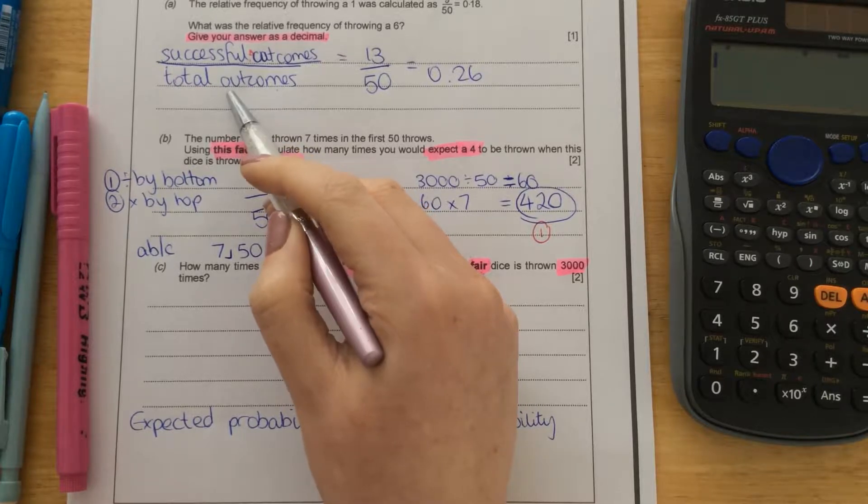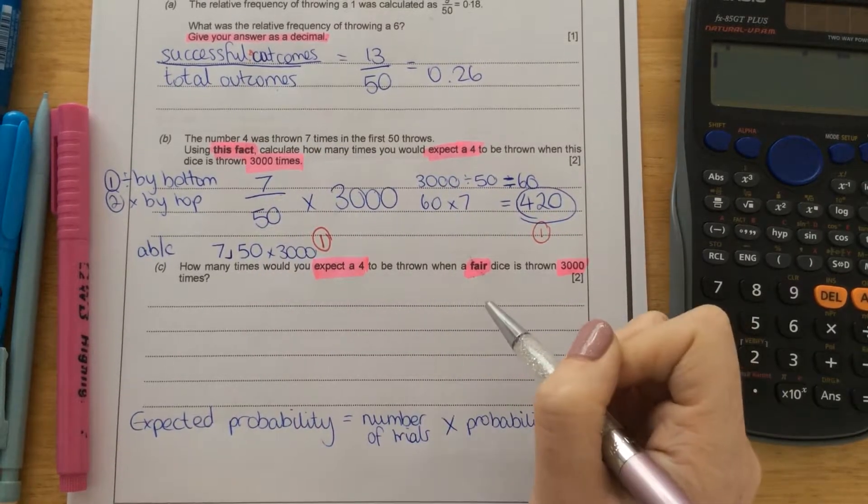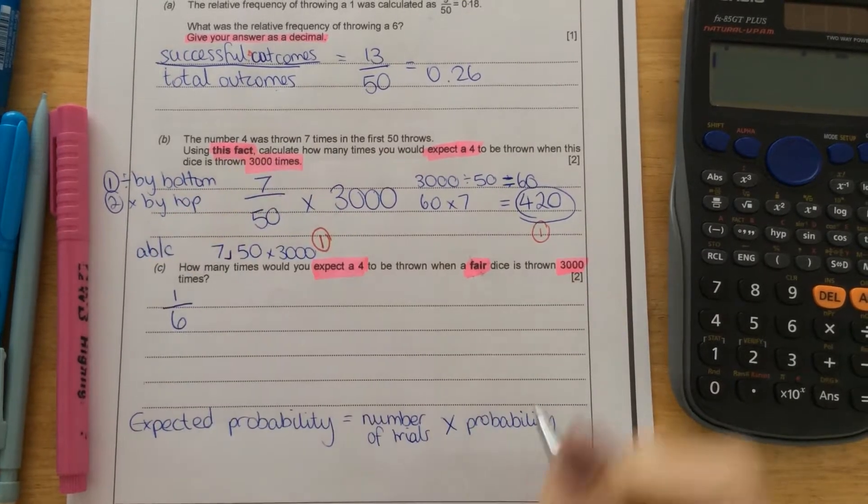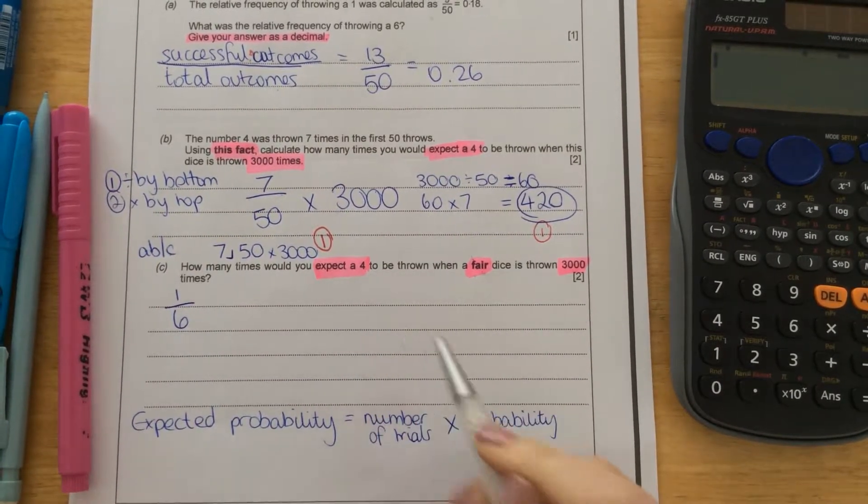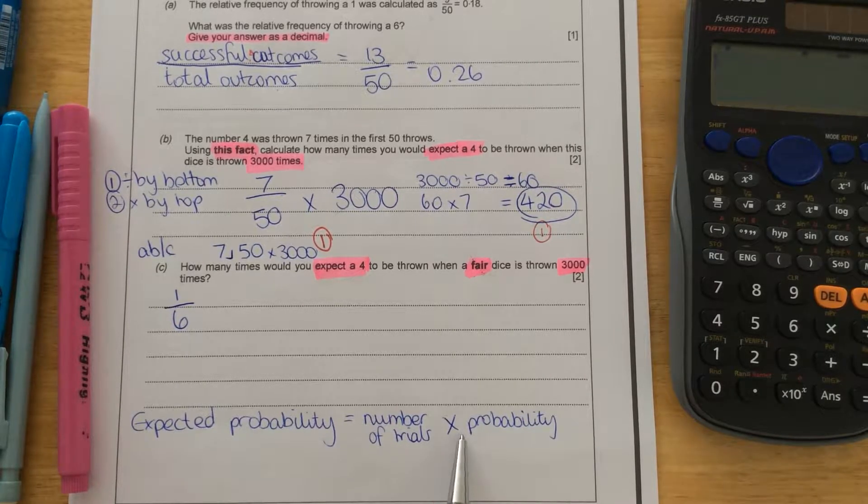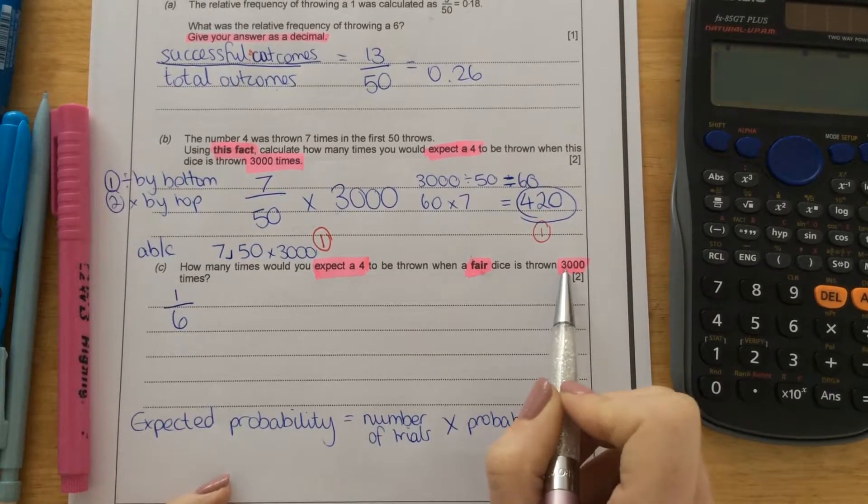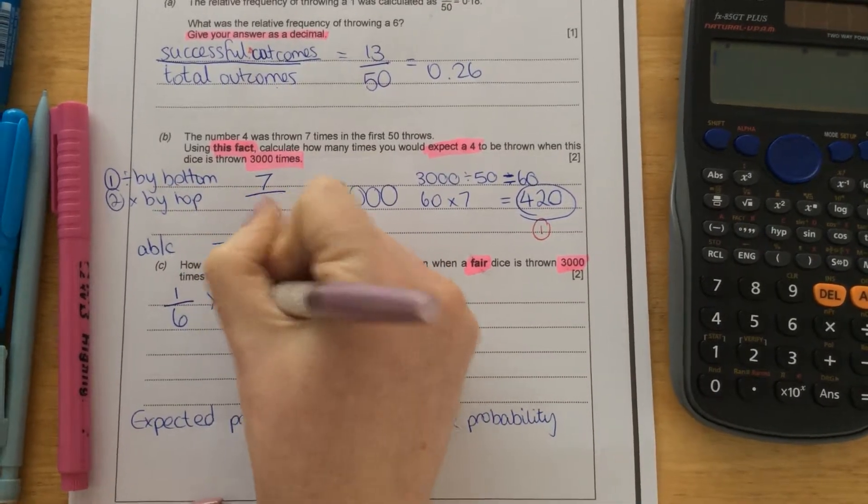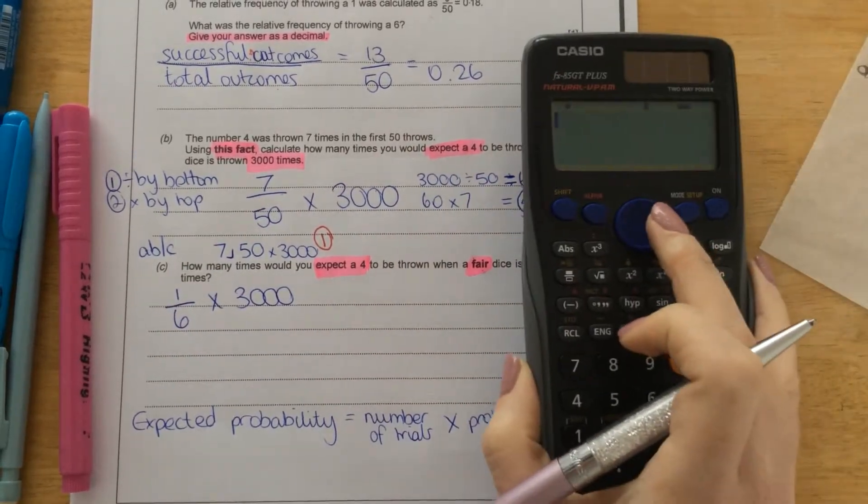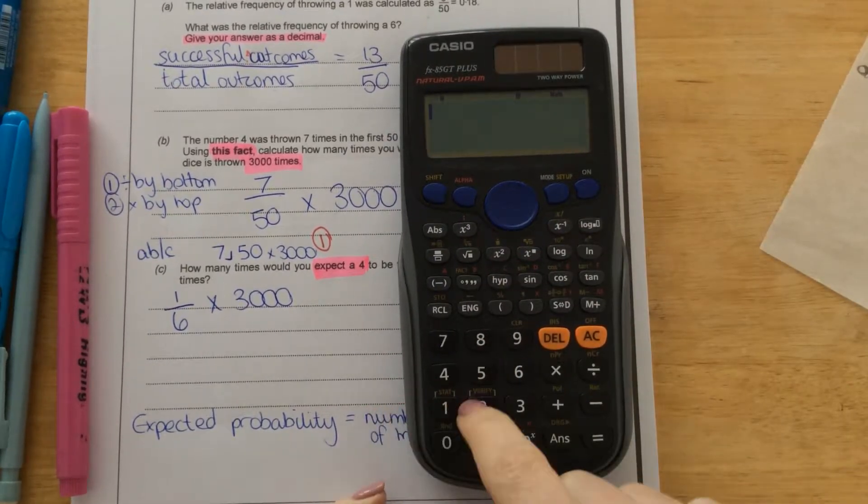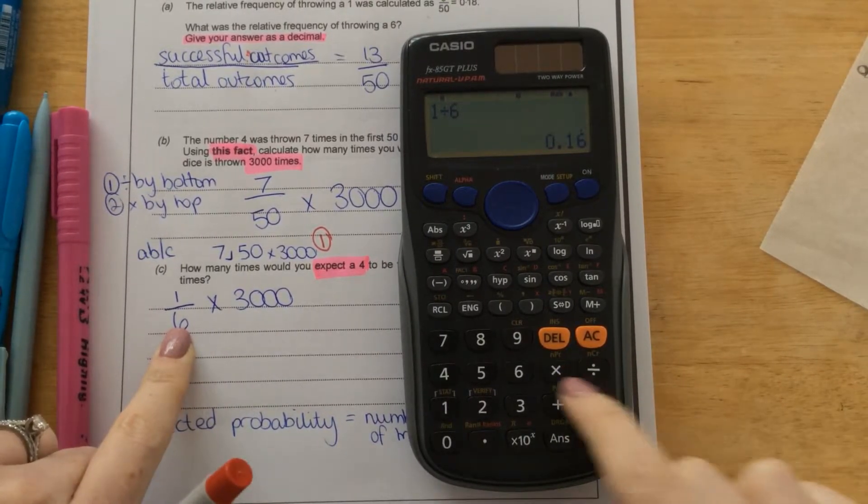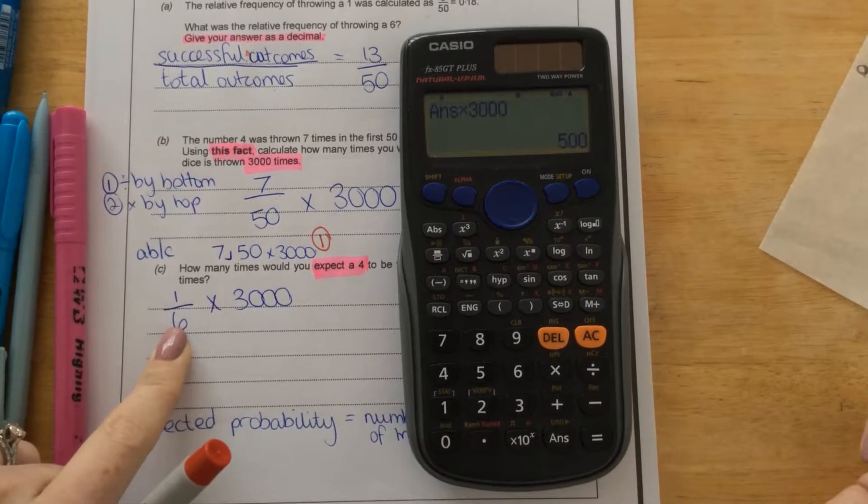So again, we're looking at successful outcomes over total outcomes. Well, the total outcomes, there's a 1, 2, 3, 4, 5, or a 6 on a die. So the bottom is going to be a 6. How many 4s are there? There's 1. So the probability of getting a 4 on a fair dice is 1 over 6. And now again, with expected probability, we times the probability by the number of trials. So the number of times they're asking us to throw the dice is 3,000. So this time, it's going to be 1 over 6 times 3,000. And you can use any of those methods above. So if we just say 1 divided by 6 to do the fraction equals, this button just turns it back into a decimal and then times that by 3,000. And that will give you 500.